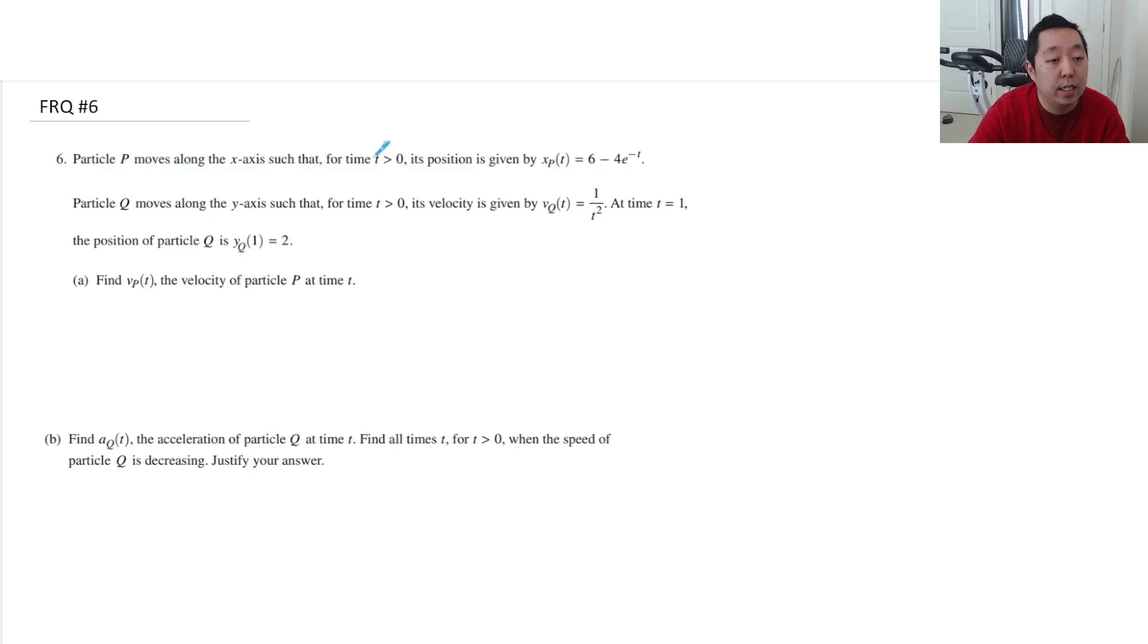So particle P moves along the x-axis such that for t greater than zero, position is given by this. Particle Q moves for t greater than zero such that its velocity is given by this. At time t equals one, the position is given by that.